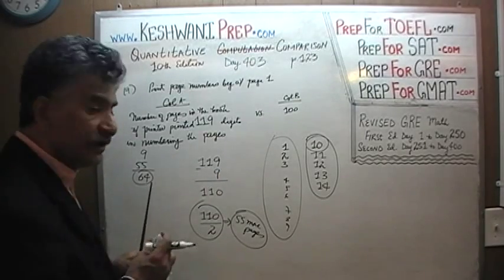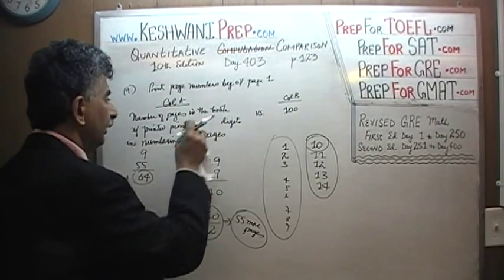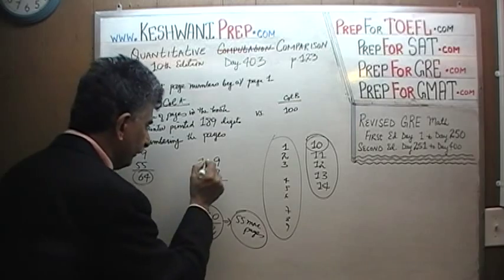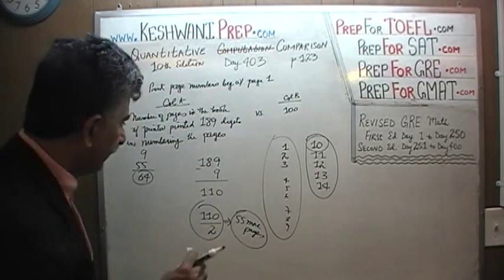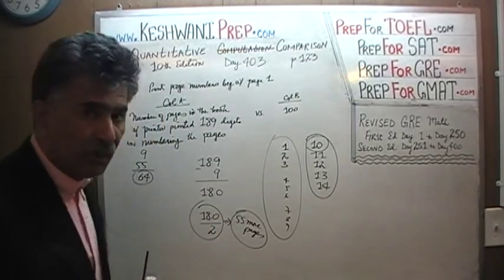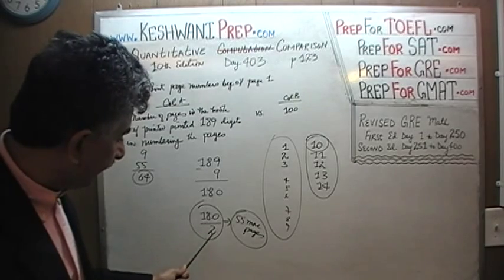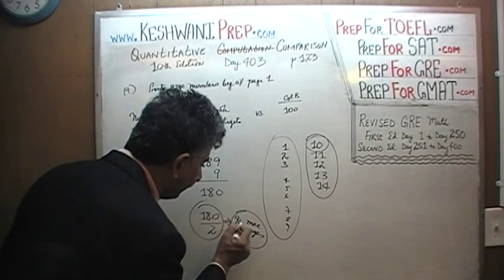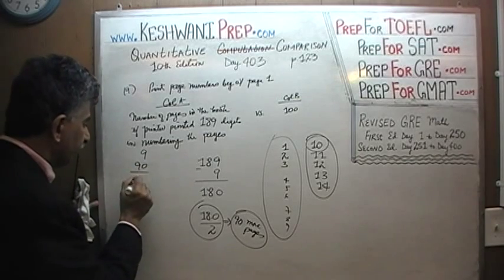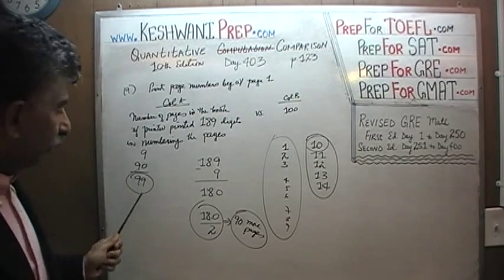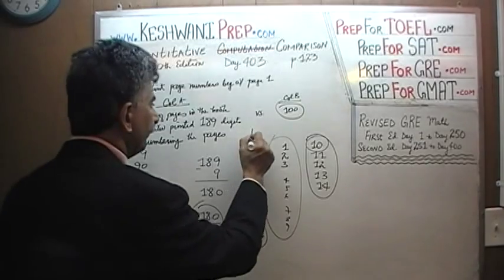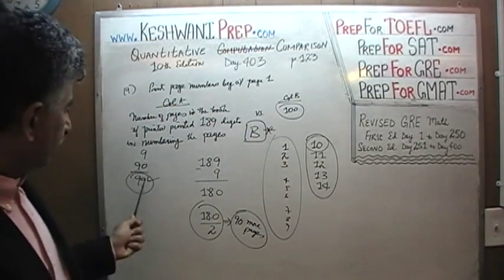Our original problem as it appears in the book says 189 digits, not 119. The first part stays the same: we use 9 digits to print page numbers 1 through 9. That leaves 180 additional digits. Since each page requires 2 digits to print its page number, 180 divided by 2 means 90 additional pages. 90 additional pages plus the first 9 pages — this book has 99 pages. We are asked to compare 99 against 100, so the answer is B because the second column is bigger than the first column.